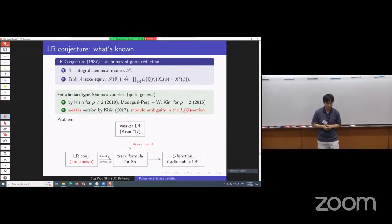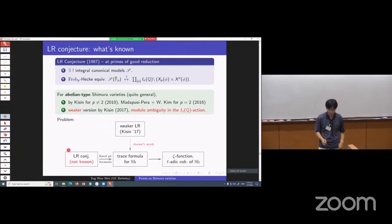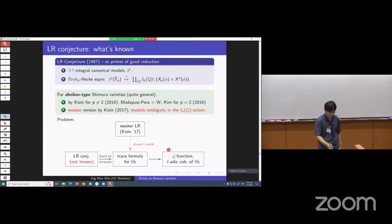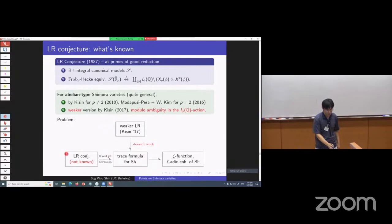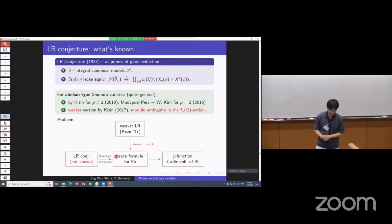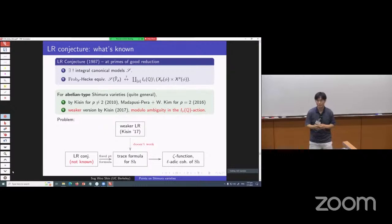In the context of the Langlands-Kottwitz-Rapoport method, ideally we want to prove the Langlands-Rapoport conjecture, obtain a trace formula computing the cohomology of Shimura varieties, and then arrive at the zeta function or cohomology of Shimura varieties together with Galois and Hecke action. But the Langlands-Rapoport conjecture is widely open even in the case of Siegel modular varieties of genus greater than 1. Kisin proved a fantastic result, but we couldn't see how to go from there to obtain the trace formula for Shimura varieties in the form we want — so we were kind of stuck.